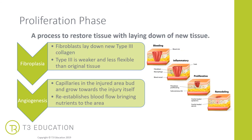The proliferation phase. This process is all about restoring tissue with the laying down of brand new tissue, and it goes through two stages. The first is fibroplasia, where the fibroblasts lay down new type 3 collagen. Fibroblasts are connected to tissue cells and create new collagen. Type 3 collagen is a lot weaker and less flexible than the original tissue, but it's the first process to restoring that tissue.